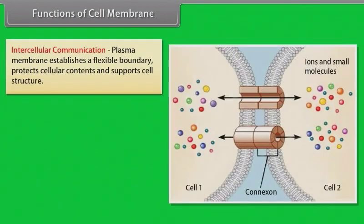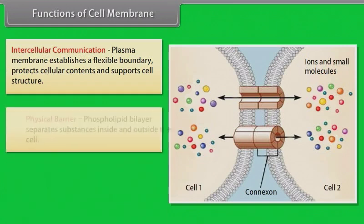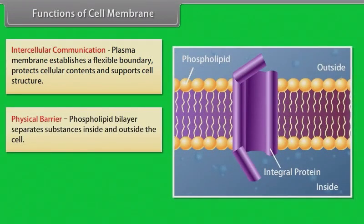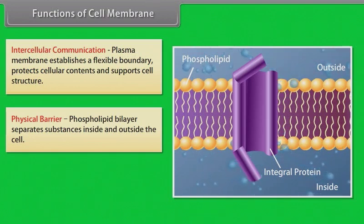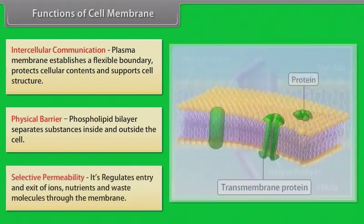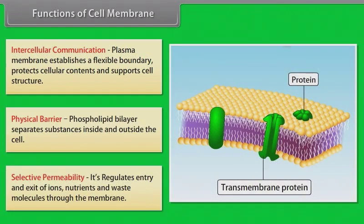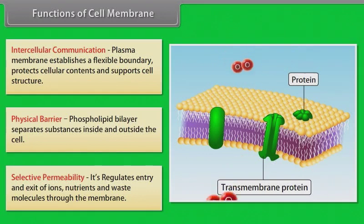Intercellular communication — the plasma membrane establishes a flexible boundary, protects cellular contents and supports cell structure. Physical barrier — the phospholipid bilayer separates substances inside and outside the cell. Selective permeability — the membrane regulates entry and exit of ions, nutrients and waste molecules.